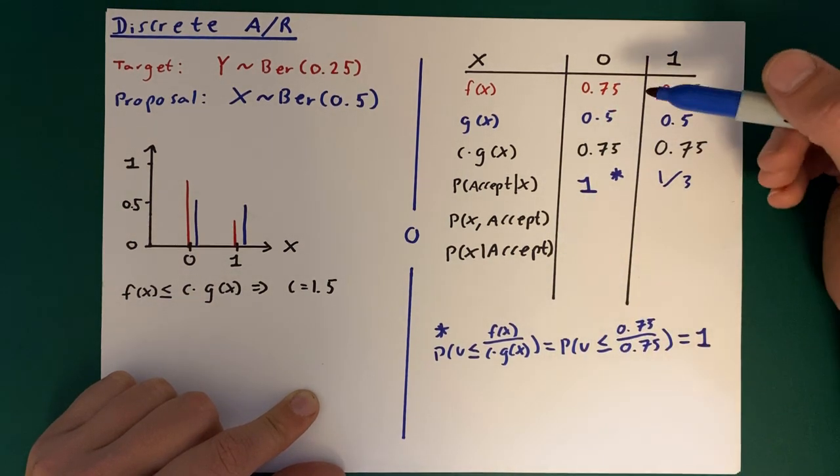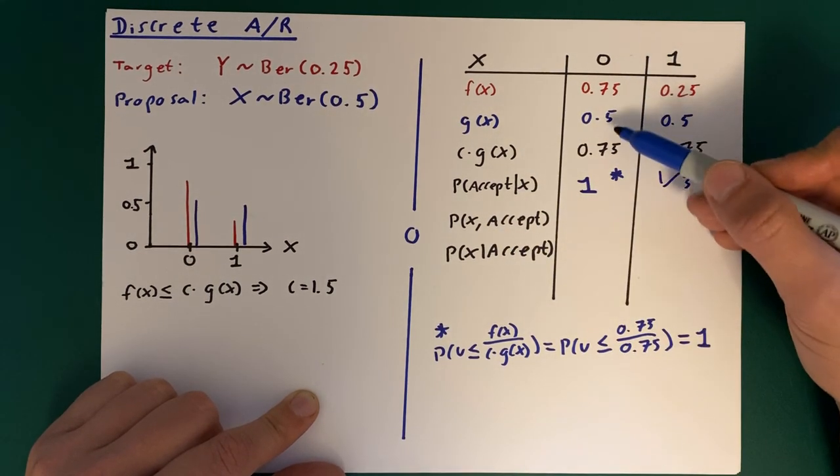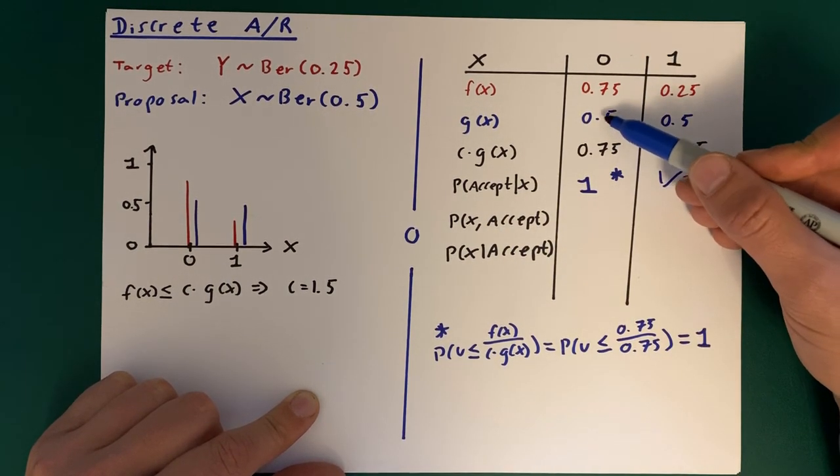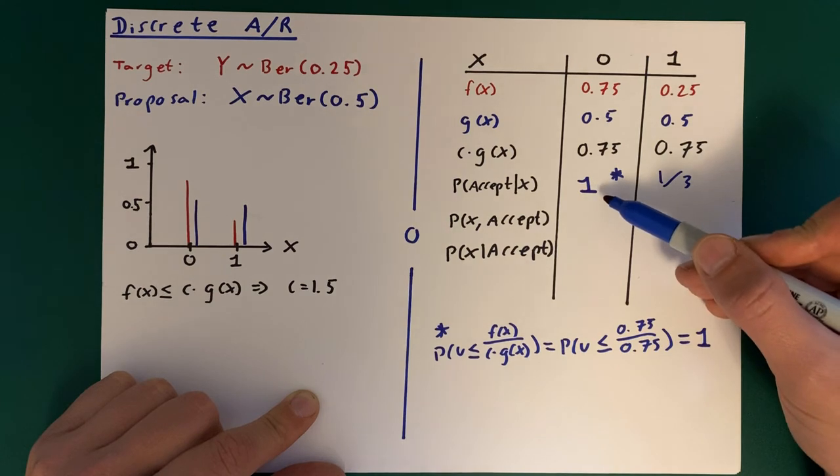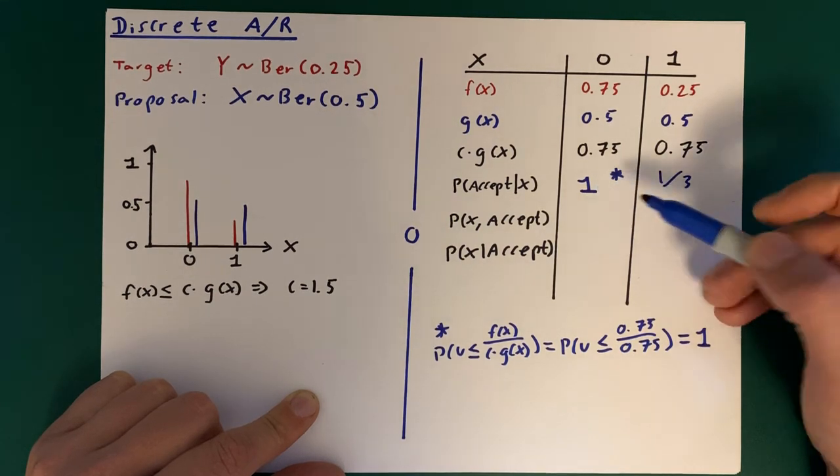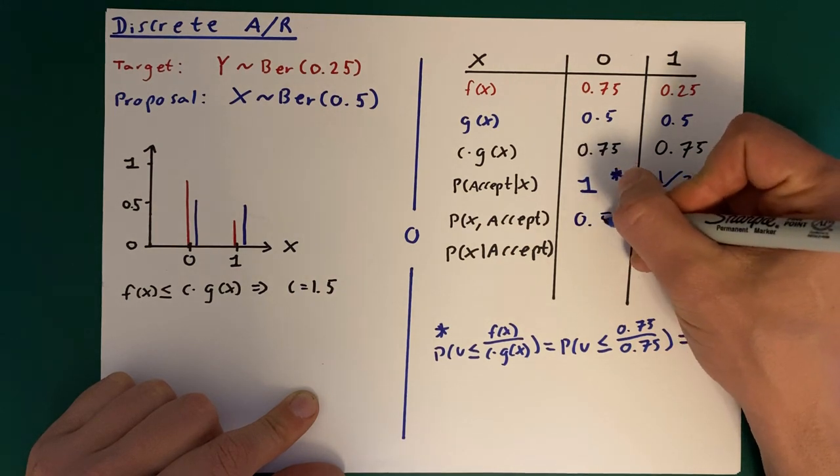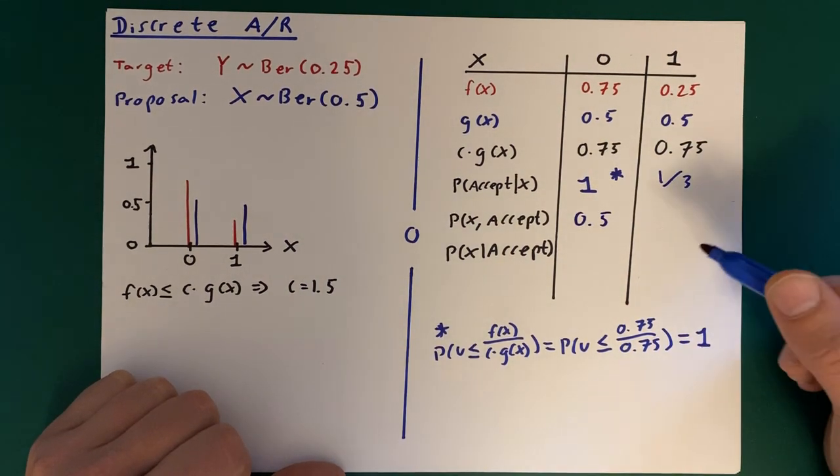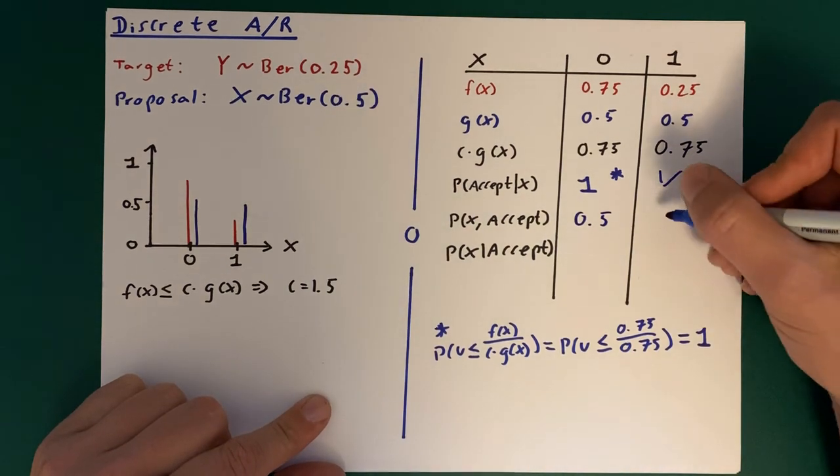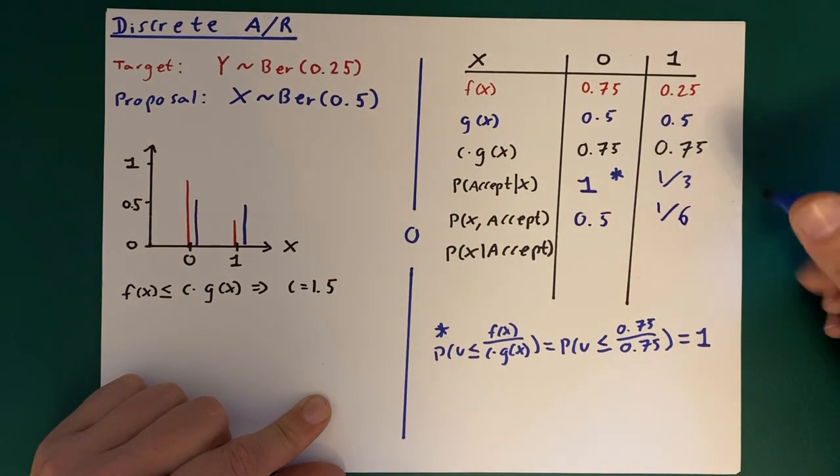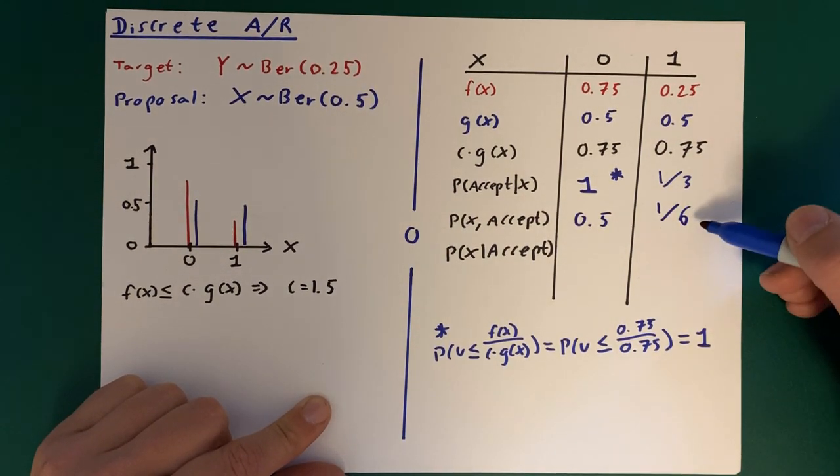And the probability of x being 0, well we know that here from the proposal is 0.5. The probability of accepting is 1, so here is just 0.5 again, the product of the two. Again, I will give all the answers, but if you want to calculate through it then the correct answer over here is 1/6.